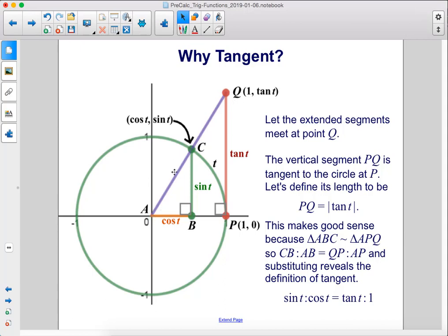This makes good sense because triangle ABC is similar to triangle APQ. So CB is to AB as QP is to AP. Substituting reveals the definition of tangent: sine is to cosine as tan t is to 1.